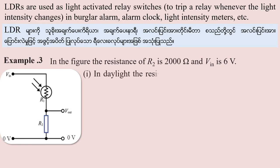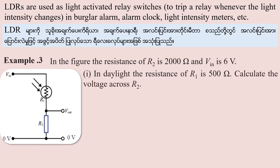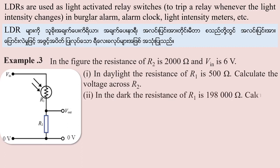Number 1: In daylight, the resistance of R1 is 500 ohms. Calculate the voltage across R2. Number 2: In the dark, the resistance of R1 is 198,000 ohms. Calculate the voltage across R2.